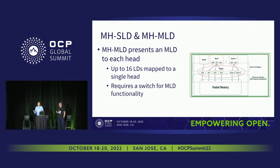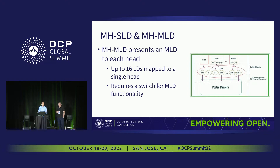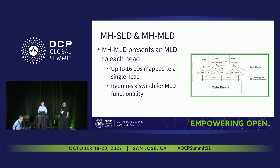An MHMLD is capable of presenting MLDs on at least one head. There are no requirements that the number of LDs presented on heads be the same — if a device can present an MLD on any head, it's considered an MHMLD. That means the head-to-LD mapping is a one-to-N relationship and doesn't have to be consistent. In the example, we have an SLD port on head zero, head one has three LDs, and so on. A head with multiple LDs mapped to it behaves exactly like a 2.0 MLD, with a limit of up to 16 LDs, and it requires a switch for the MLD functionality.